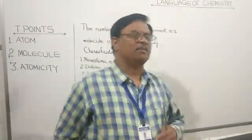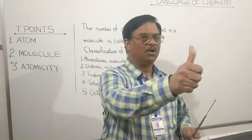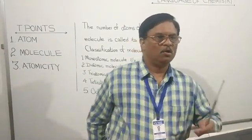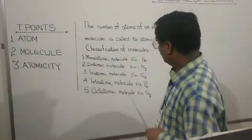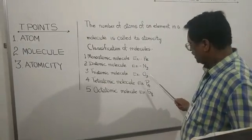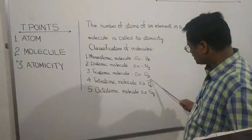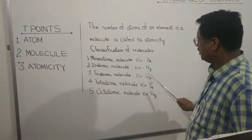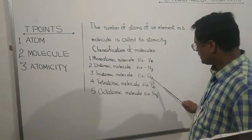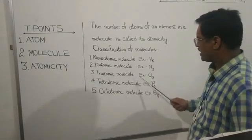Next is the triatomic molecule. When three atoms are present in one molecule, it is said to be a triatomic molecule. Example: ozone molecule O3. The ozone molecule is indicated by O3. The subscript three indicates the number of oxygen atoms. Three oxygen atoms are present in one molecule of ozone. Nothing is written before O, therefore it is one molecule, and the three indicates three atoms of oxygen — therefore O3 is a triatomic molecule.